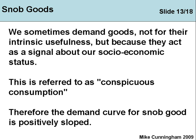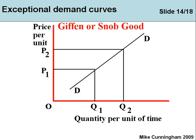Therefore the demand for snob goods is positively sloped. The Giffen and the snob good both have the same type of demand relationship — as the price of Porsches increases they become even more of a snob good. If a Porsche were the same price as a Fiesta or a Corsa, it would be a good car but it wouldn't have the same appeal. So snob goods, Veblen goods, and Giffen goods all have upward-sloping demand curves.